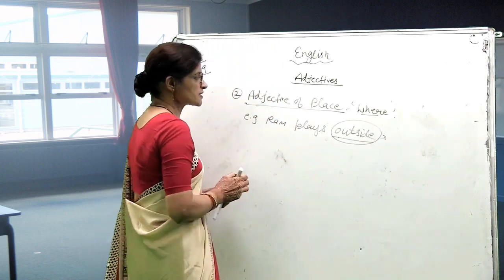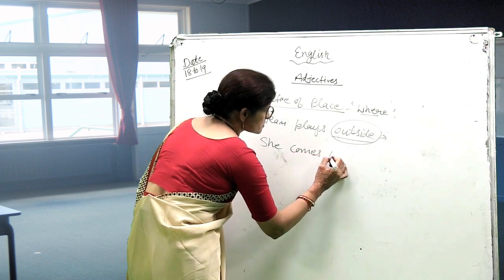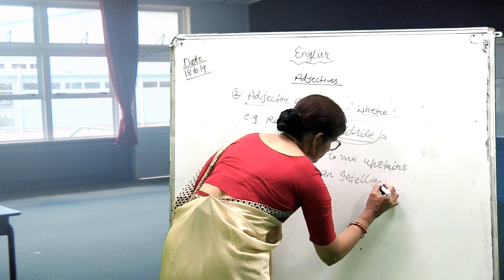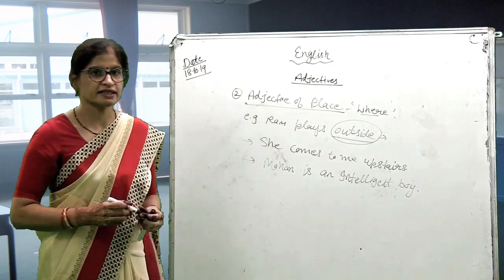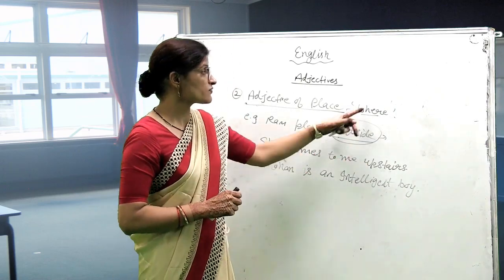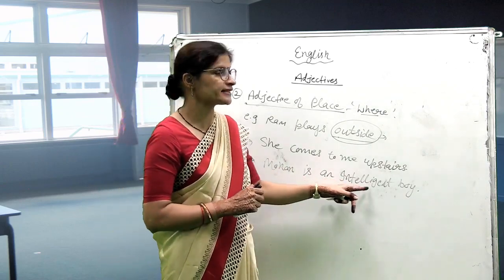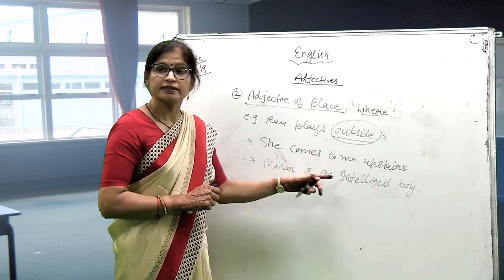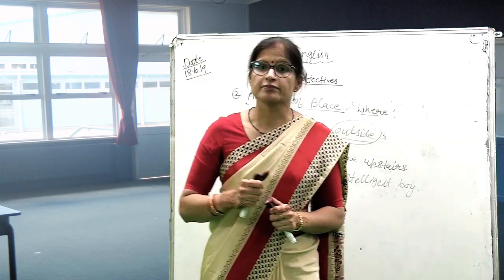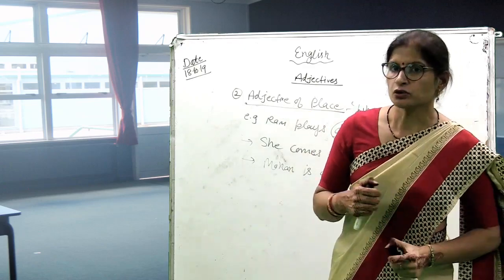I am giving you more examples: 'She comes to me upstairs. Mohan is an intelligent boy.' Can you identify the adjectives? In the first sentence, 'upstairs' gives the answer of where, so it is the adjective of place. In the second sentence, 'intelligent' tells us the quality of Mohan, so it is the adjective of quality. Today we learnt two types of adjectives: adjective of quality and adjective of place. In the next chapter, we will do two more adjectives. Thank you.